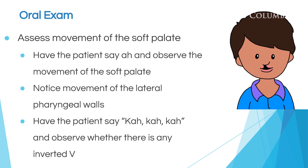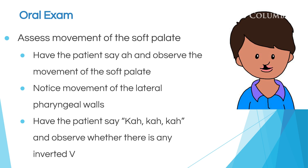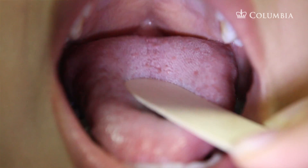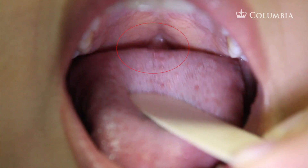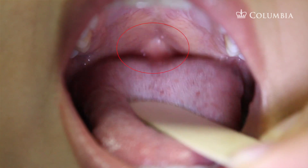You may also look at the lateral pharyngeal walls, and at times you may see those lateral pharyngeal walls moving medially. Lastly, have the patient say 'ah' and look at the soft palate to see if there's an inverted V. An inverted V is a sign of a submucous cleft.